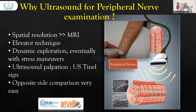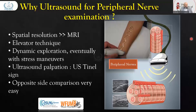The first question is: why ultrasound for peripheral nerves examination? I believe most of you are already familiar with the basic physics of ultrasound. We know that in MR we use spatial resolution. The elevator technique is another important thing for ultrasound — we can elevate structures, move structures, and have dynamic exploration with stress maneuvers, which cannot be performed in MR or CT.